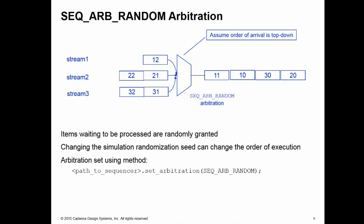Because this is random selection, when you change the randomization seed of your simulator, this can change the order of execution, the order of selection of the items from the streams. Remember, if you want to use the random arbitration policy, you need to call the sequencer method set_arbitration to define this is the new scheme for your sequencer.